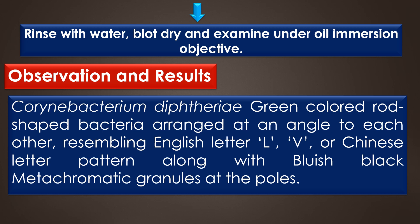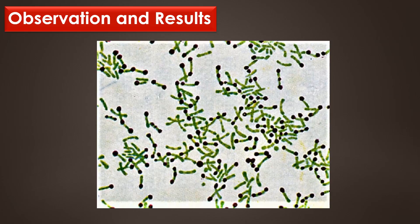Observations and results: If Corynebacterium diphtheriae is present in the sample, it appears as green colored rod-shaped bacteria arranged at an angle to each other, resembling the English letters L or V, or the Chinese letter pattern, along with bluish black metachromatic granules at the poles. This image shows the metachromatic granules and the Corynebacterium diphtheriae cells. The green cells represent the bacterial cells, and the bluish black at the edges represents the metachromatic granules.